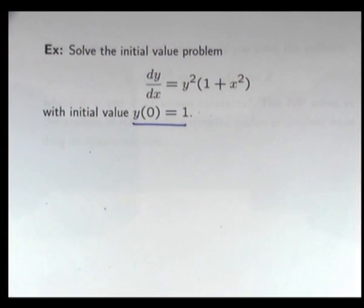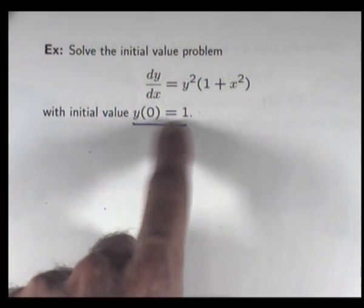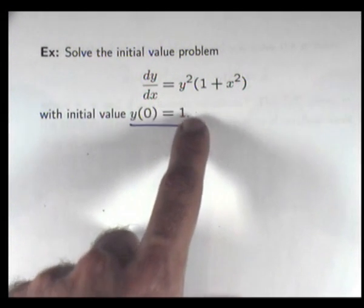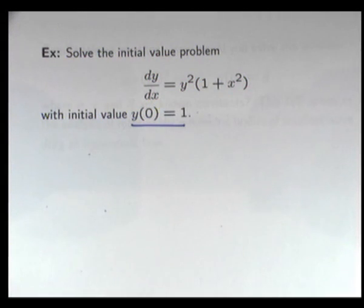Here's our extra piece of information. In other words, we know the value of the unknown function at one point, namely x equals zero. We know that the solution is equal to one. And what we want to do is solve the combination of two equations here.